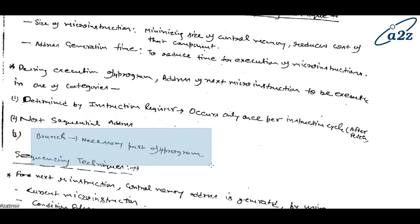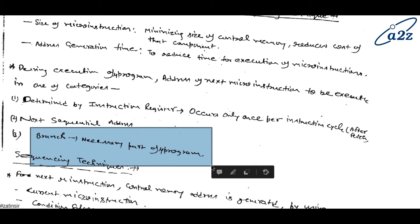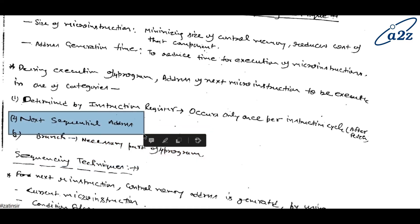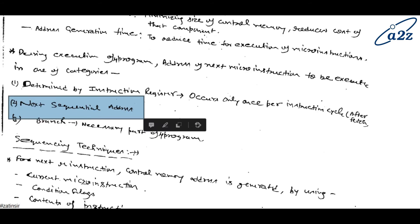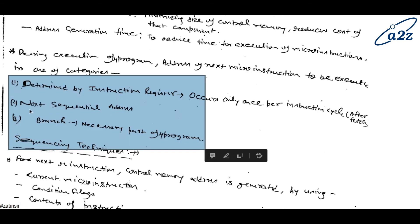Third technique is branch instruction. If you have applied a branch instruction — like a call, jump, or return statement — then the next sequential address will be wrong. In that case the sequential approach fails. So these are the three techniques: first, using the instruction register; second, using sequential address; third, branch instruction.